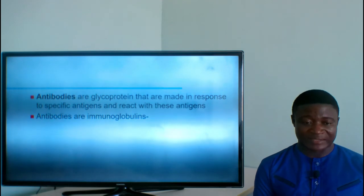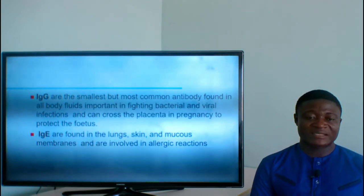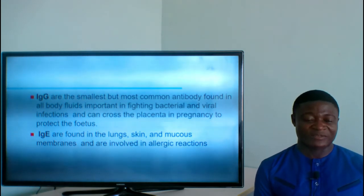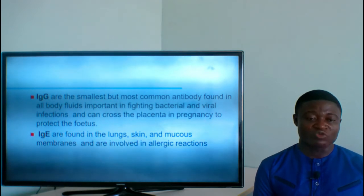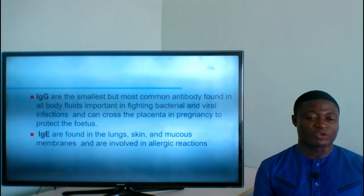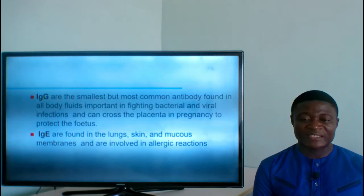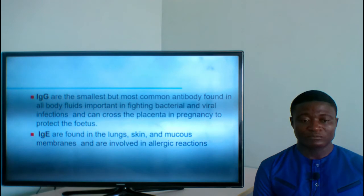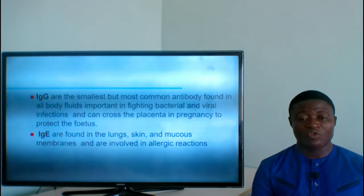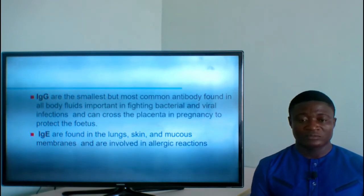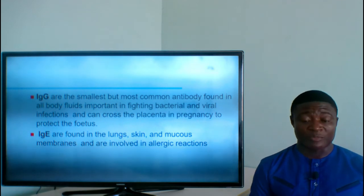Antibodies are immunoglobulins, and we have different types. Immunoglobulin G (IgG) is the smallest but most common antibody, found in all body fluids. It is important in fighting bacterial and viral infections and can cross the placenta during pregnancy to protect the fetus.